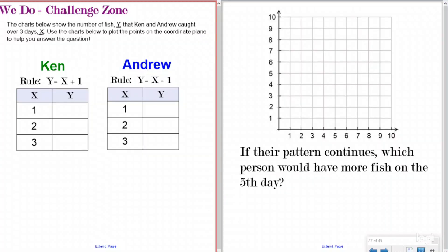Our we do challenge zone problem. We're taking it to the next level by giving you two different pattern charts, and then a question to answer. It says the chart below shows a number of fish Y that Ken and Andrew caught over three days. So that means our Y is going to be our fish that we caught. So Y is going to be fish. And then it says over three days, X. So our X is going to be our days.